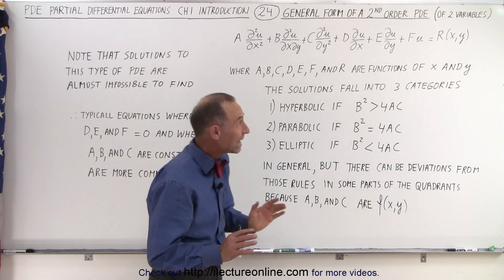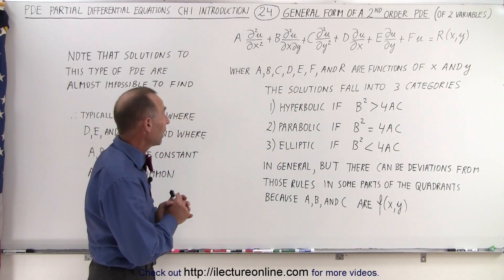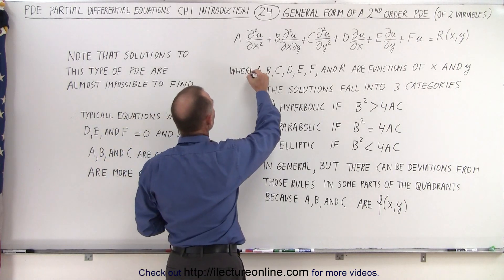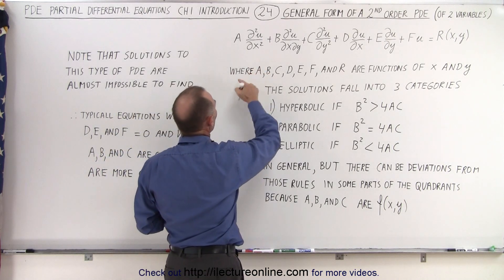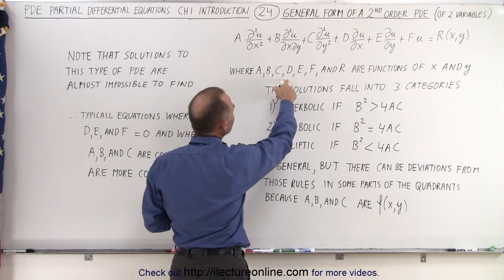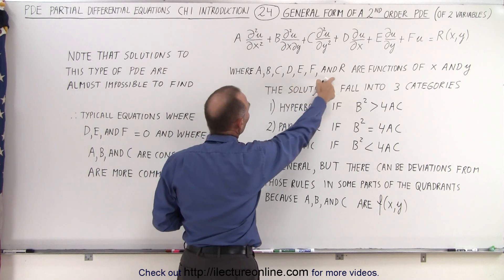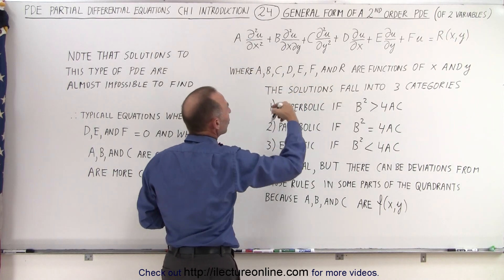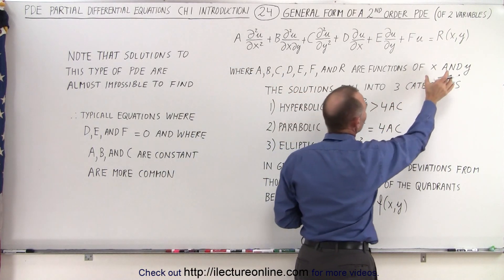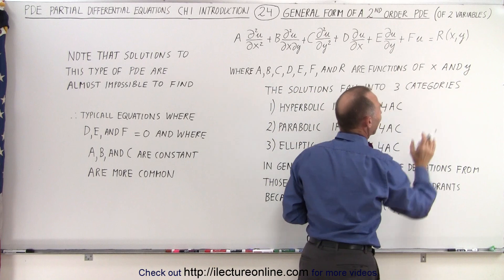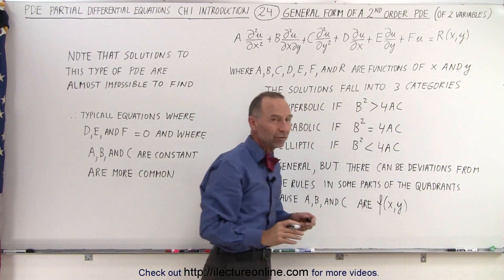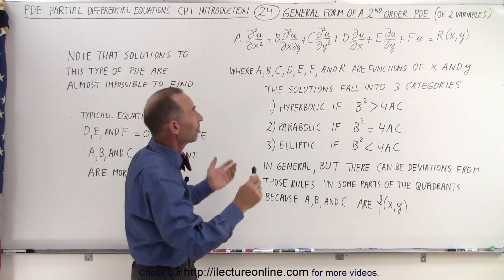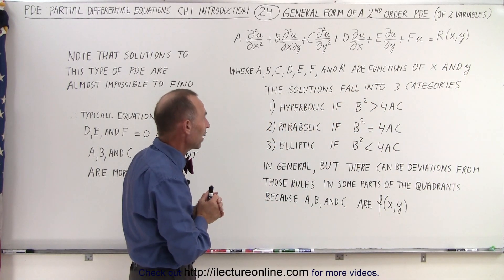That's quite a general form. Where A, B, C, D, E, F, and R — all these letters — represent themselves as functions of X and Y. So you can see the complication here: they can all be different functions of X and Y.